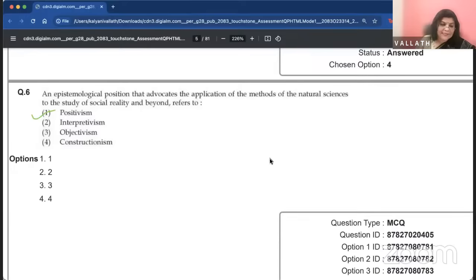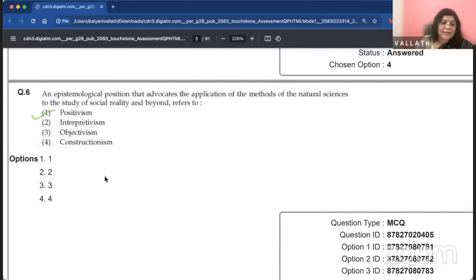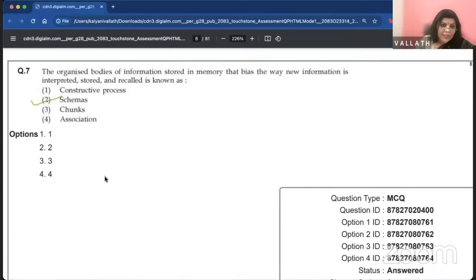Question number six. An epistemological position that advocates the application of the methods of the natural sciences to the study of social reality and beyond. Answer is positivism. Interpretivism, objectivism, and constructivism are clearly wrong there. Even if you do not know positivism, it is kind of clear to me.